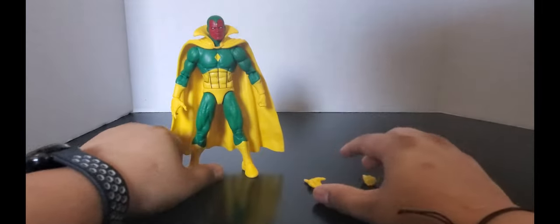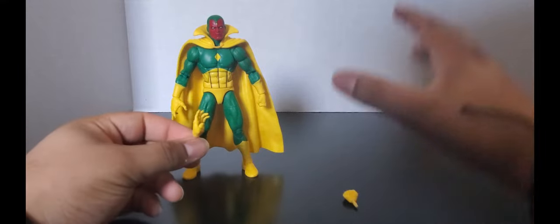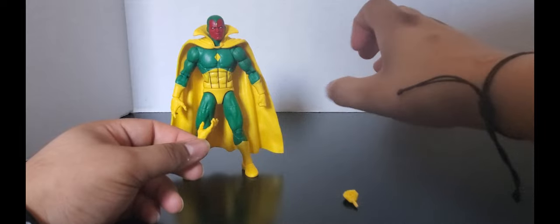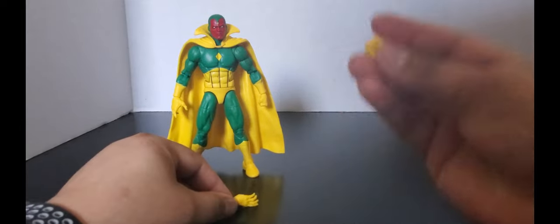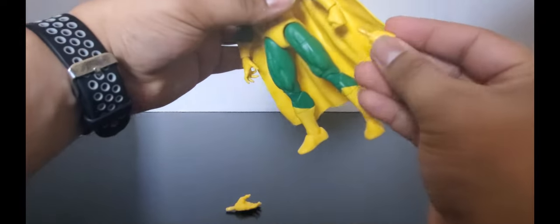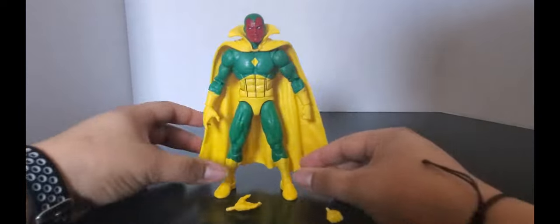But accessory-wise, it just comes with a set of two open hands. Kind of just reaching hands. Reaching for, I don't know what it's reaching for. Maybe Ultron's throat. I don't know. And then, two fists. Obviously, these are the bigger set of hands.